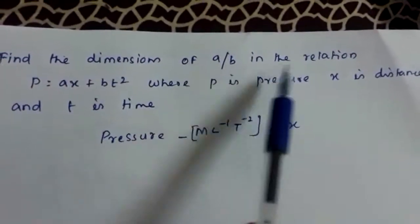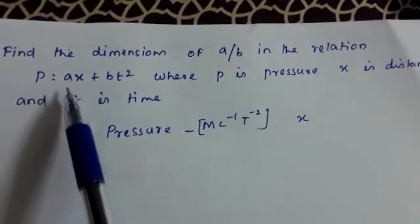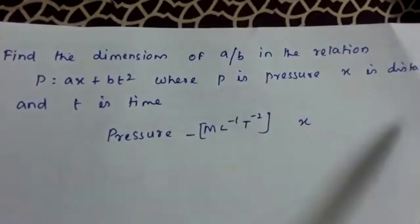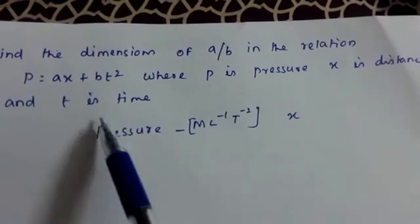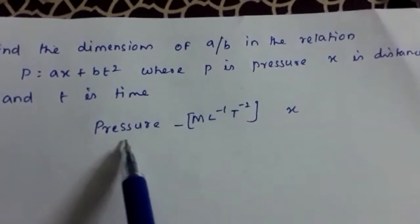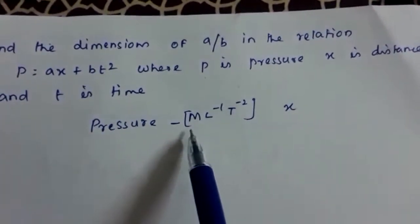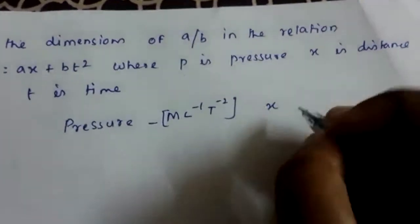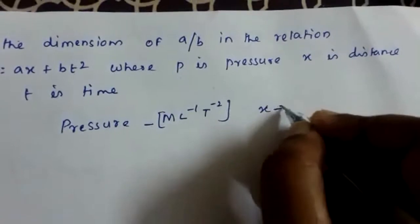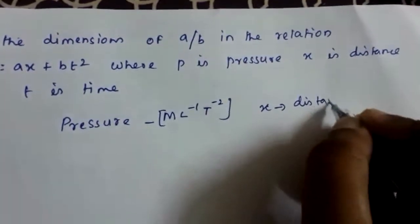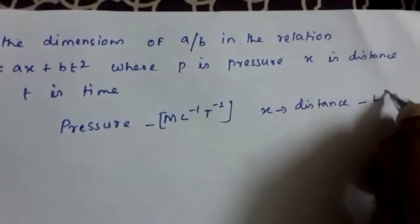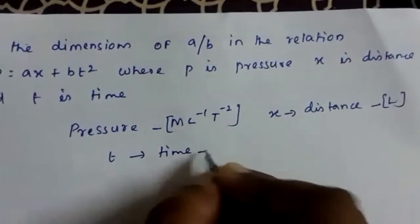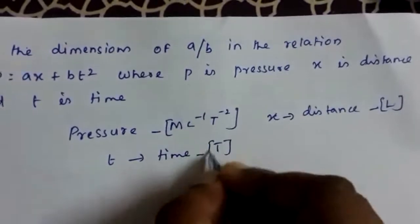Find the dimension of a by b in the relation p is equal to ax plus bt squared, where p is pressure, x is distance, and t is time. The dimension for pressure is M L raised to minus 1 T raised to minus 2. The dimension for distance is L, and the dimension for time is T.